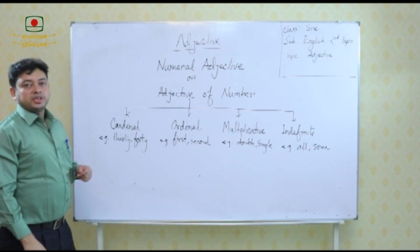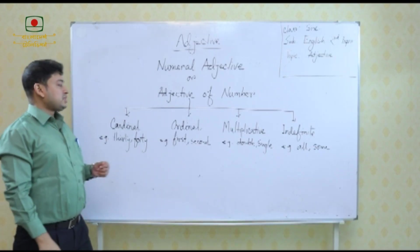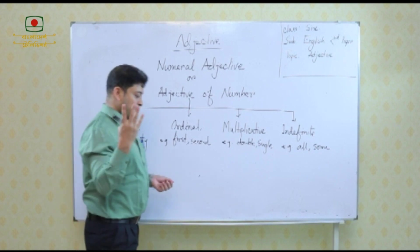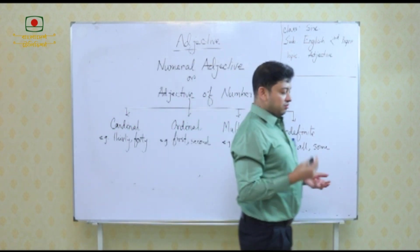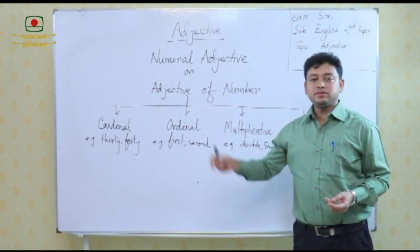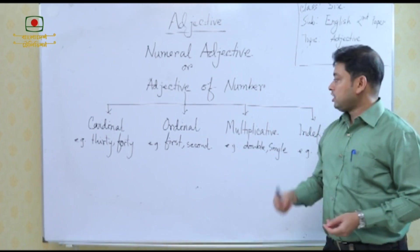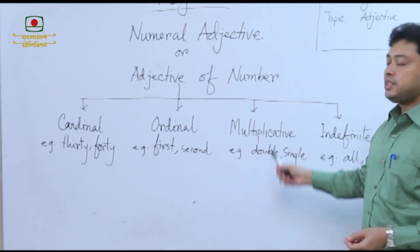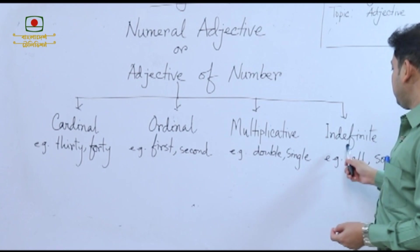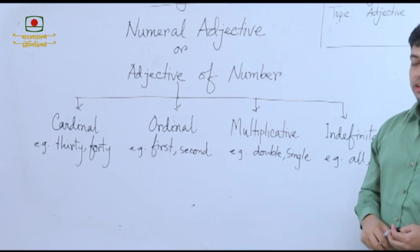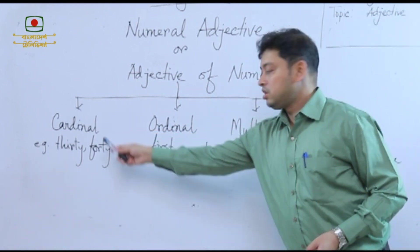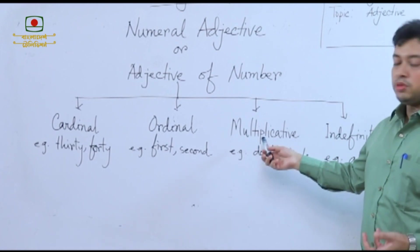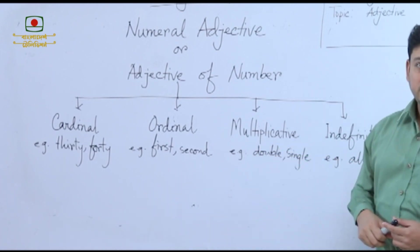Adjective of number can be classified into four types. The first one is cardinal numeral, the second one is ordinal numeral, the third one is multiplicative numeral, and the last one is indefinite numeral.